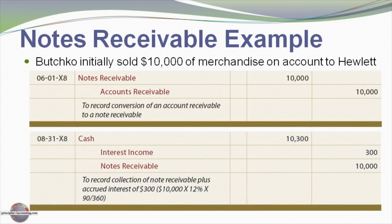When the note matures, the collection is recorded. We debit cash $10,300, credit the principal amount of the note receivable $10,000, and the difference is recorded as interest income. We can verify that $300 amount: $10,000 principal times 12%, times 90 days over 360 days, or one-fourth of a year — that's 3%, or $300 of interest.